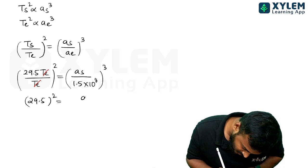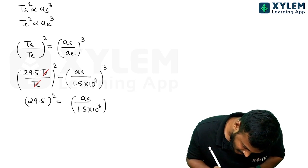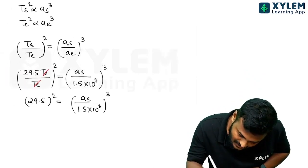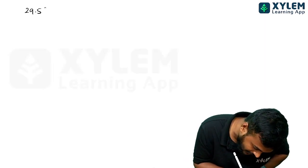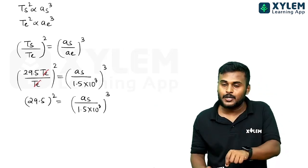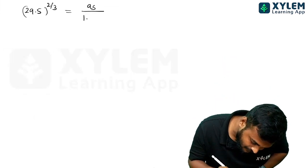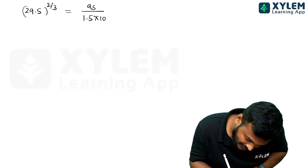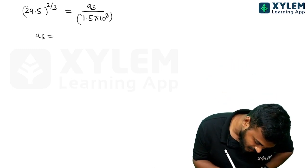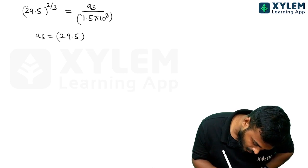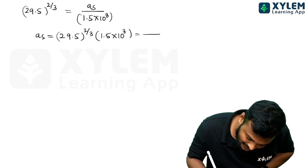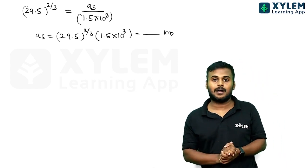So a_s divided by a_e whole cube equals a_s divided by 1.5 into 10 raise to 8. The answer is: a_s equals 29.5 whole power of 2 by 3 into 1.5 into 10 raise to 8 km. Use a scientific calculator to compute this.